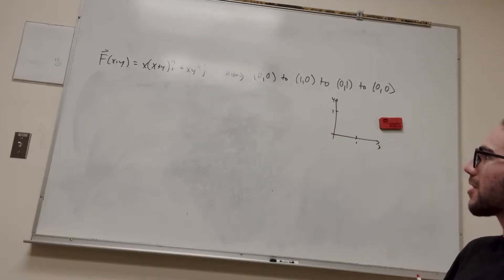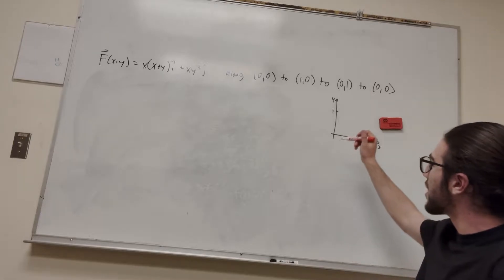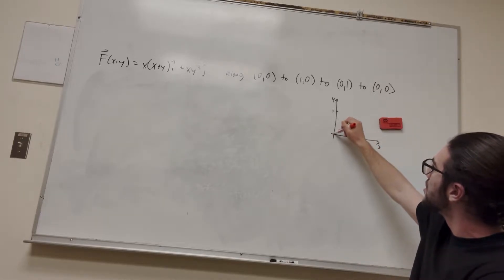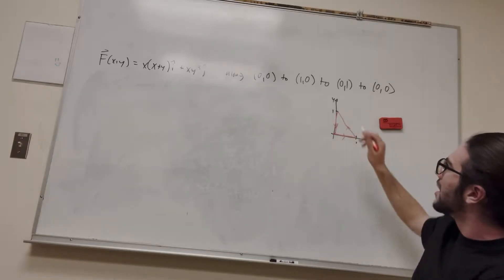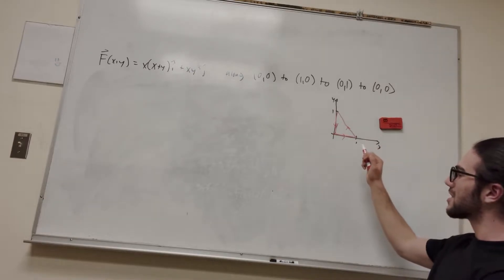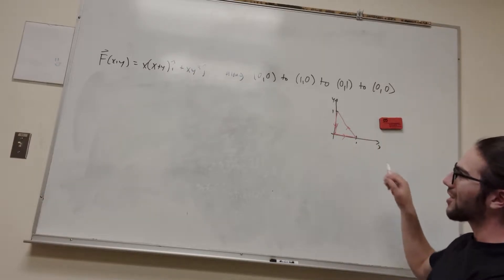So it gives us this path of a particle moving from 0, 0, let's go ahead and draw this, to 1, 0, to 0, 1, and then back to 0, 0. So it goes this way, and what you can find is that this is a closed simple curve that goes in the counter-clockwise direction.